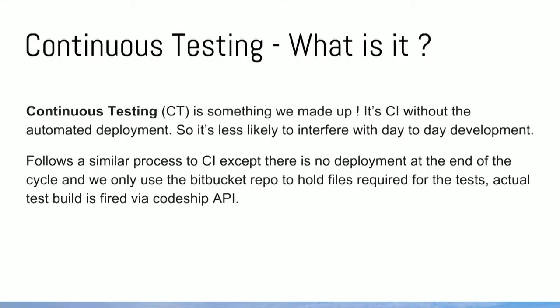Another testing method I've started implementing more is one I made up: continuous testing. It's basically CI without the automated deployment, so it's less likely to interfere with day-to-day development. The concept is: on every commit it'll run your tests but you don't have to worry about it — you don't have to worry about deployment, you don't have to worry about running a test locally, it's just constantly running in the background. It follows a similar process to CI except there's no deployment at the end, and we only use the Bitbucket repo to hold files required for the tests. The actual test build is fired by the CodeShip API.